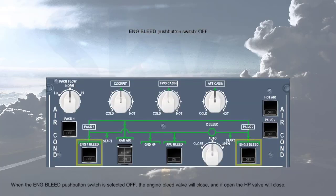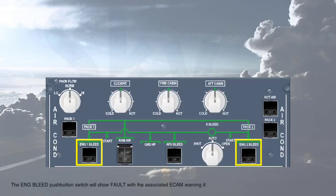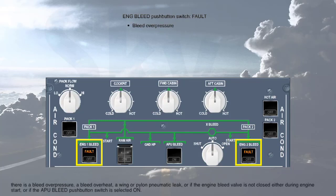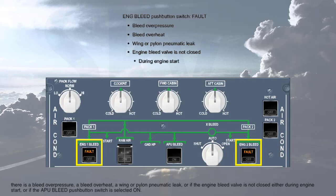When the engine bleed push-button switch is selected off, the engine bleed valve will close, and if open, the high pressure valve will close. The engine bleed push-button switch will show fault with the associated ECAM warning if there is a bleed over-pressure, a bleed over-heat, a wing or pylon pneumatic leak, or if the engine bleed valve is not closed either during engine start or if the APU bleed push-button switch is selected on.